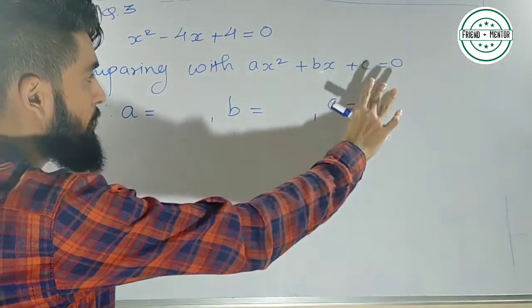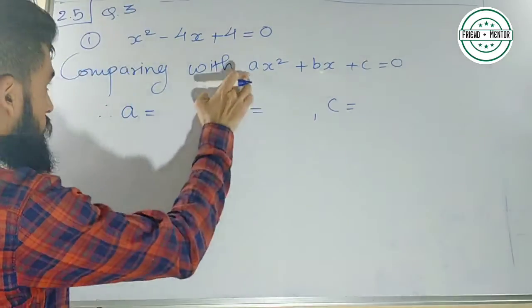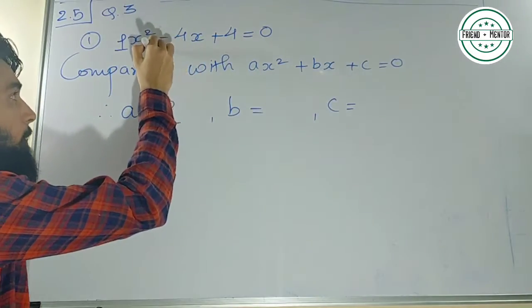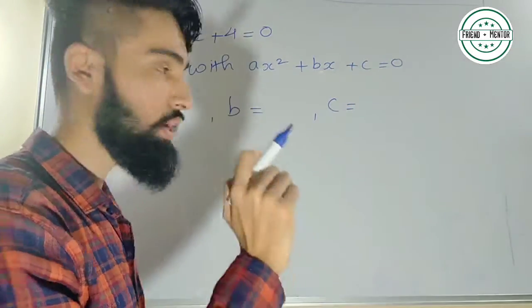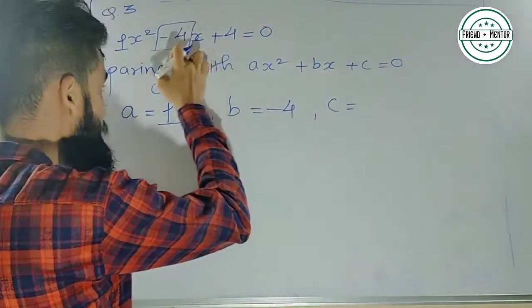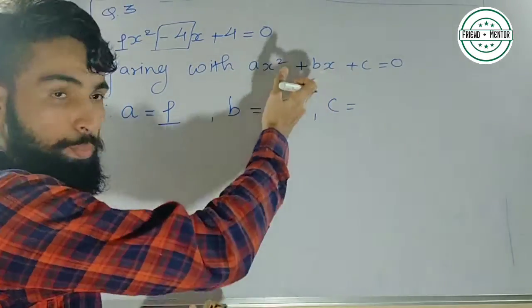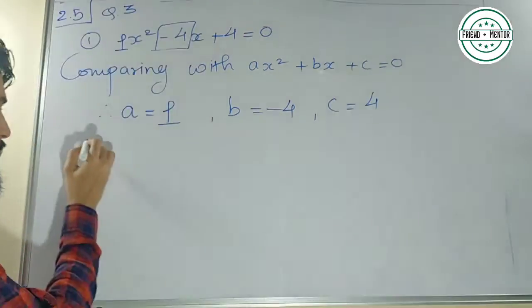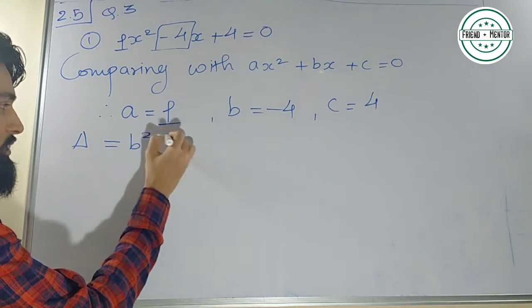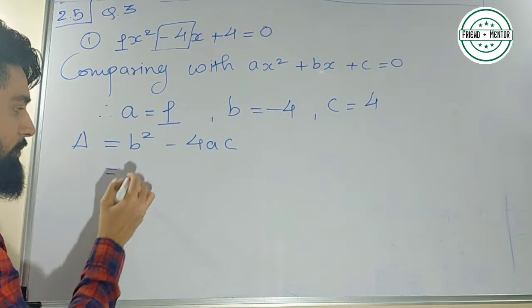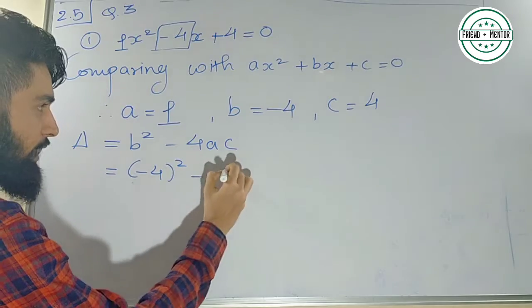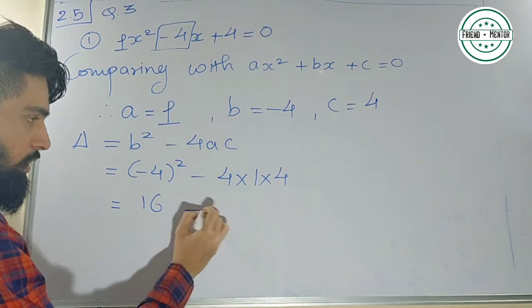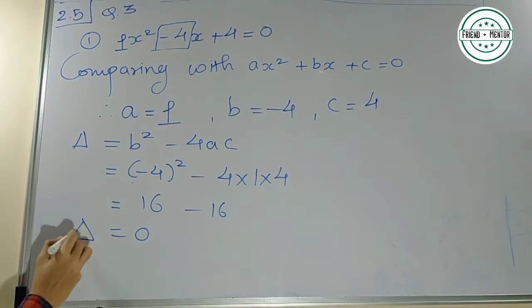A का value क्या है — यहाँ पर कुछ नहीं है मतलब 1 होगा, a is 1. B का value is minus 4 — sign का ध्यान रखना है, 4 नहीं है, वो minus 4 है। C का value है 4. Discriminant = b² − 4ac = (−4)² − 4 × 1 × 4 = 16 − 16 = 0. Value of delta = 0.